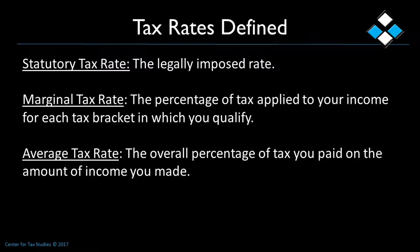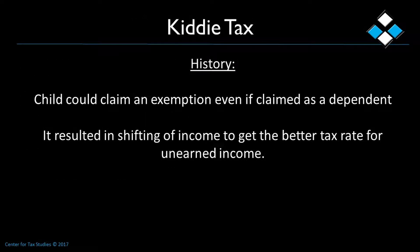The average tax rate is the overall percentage of tax you paid on the amount of income you made. To calculate this, you divide the total amount of taxes paid by your taxable income. Now let's talk about the kiddie tax. This applies if a child is a dependent of parents or of another. It used to be that a child could claim his own exemption even if he was the dependent of another, so parents would shift unearned income to their children to shelter income and not pay as much tax.